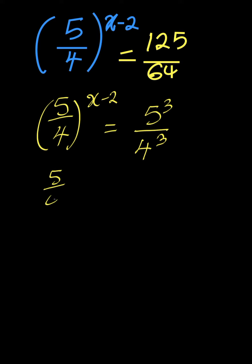Now, we can write 5 over 4 all to the power of x minus 2 is equal to 5 over 4 all to the power of 3 because the power of 3 is common, we can single it out.